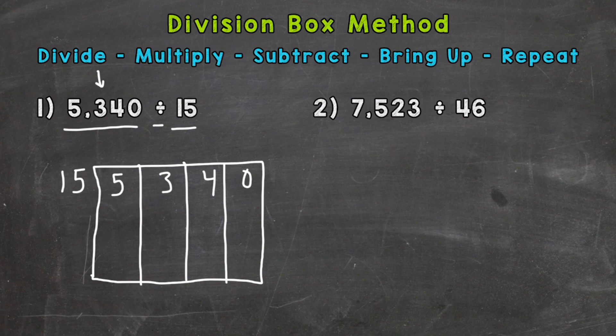Now we're set up with our box, and we're ready to go through the process. And those steps are at the top of your screen. Divide, multiply, subtract, bring up, repeat. Now those steps are very similar, almost identical to the traditional long division method. The only difference, we're going to bring up rather than bring down. And you'll see what I mean by that here in a second.